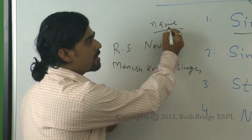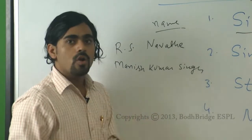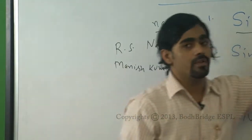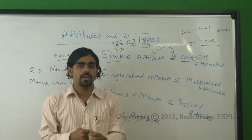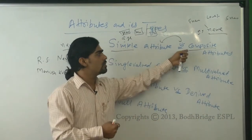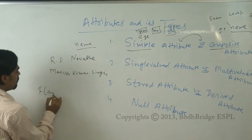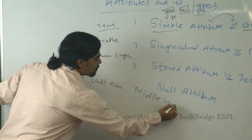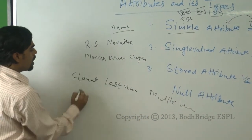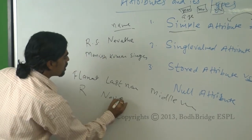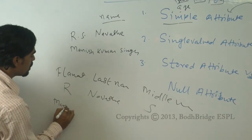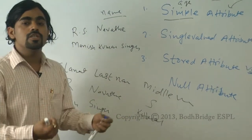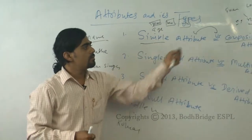If you choose a simple attribute for name, all name data is recorded in a single field. Alternatively, if you create a composite attribute for name, it can be broken into first name, middle name, and last name. For example: first name 'R', last name 'Navate', middle name 'S', or 'Manish Singh Kumar'. This is just a different convention for how you design your database.